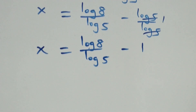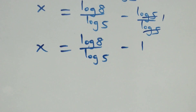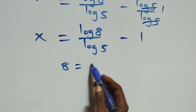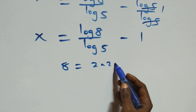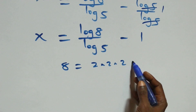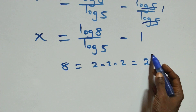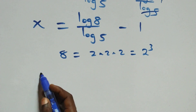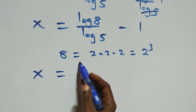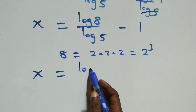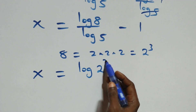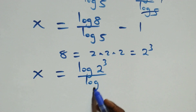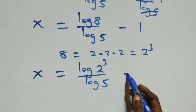Also here, 8 can be expressed as 2 times 2 times 2, which is the same as 2 raised to power 3. So what we have becomes x equals log(2 raised to power 3) over log 5, minus 1.